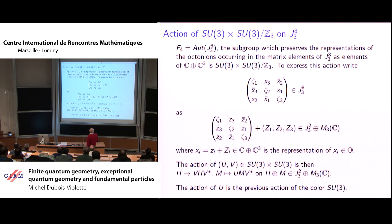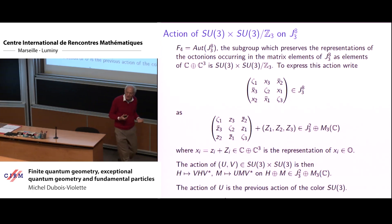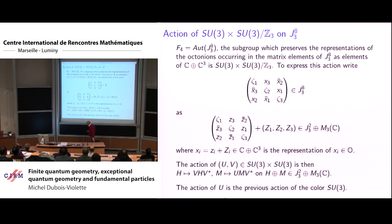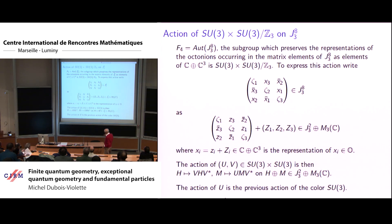Now I come back to my original point: the right formulation of the lepton-quark symmetry is the identification of the octonion algebra with C⁴ = C ⊕ C³, where C is the component of the unit. I want to look at the automorphisms of the exceptional algebra. The automorphism group of the exceptional algebra is the exceptional group F₄, but the subgroup which preserves the splitting C ⊕ C³ of the three octonions appearing in the matrix is the group SU(3) × SU(3) / ℤ₃.